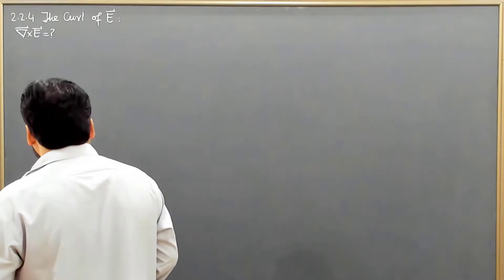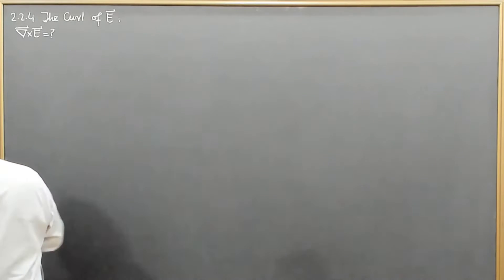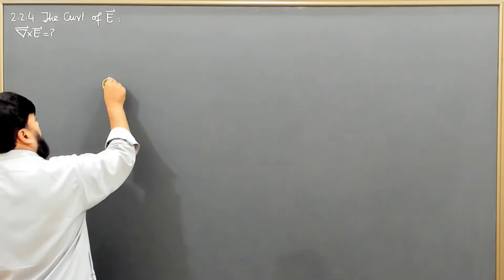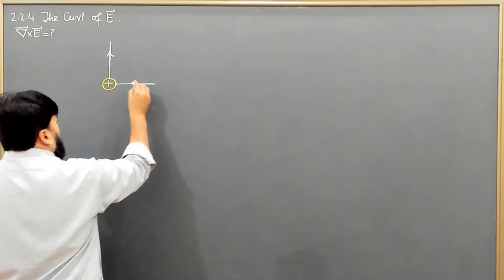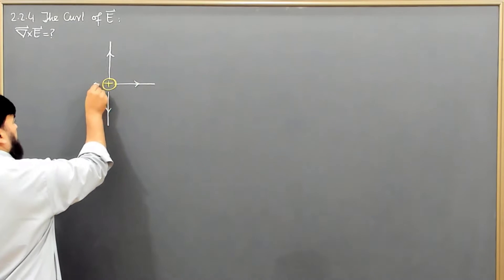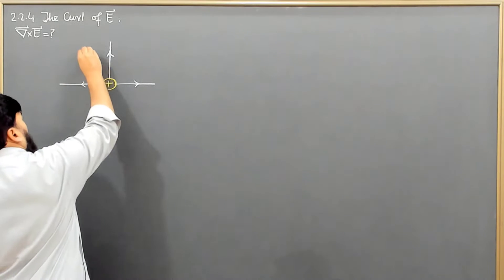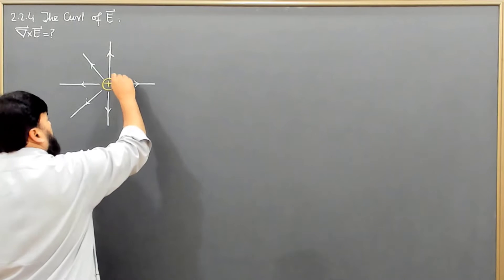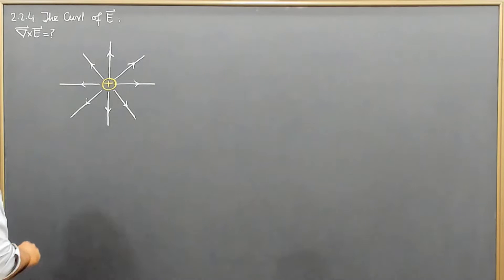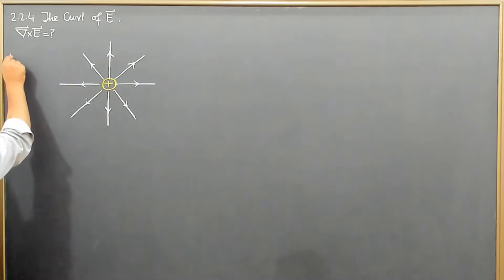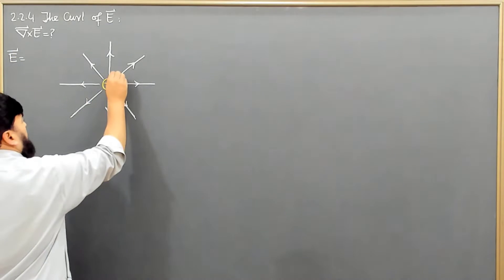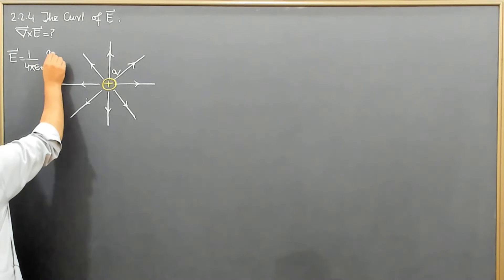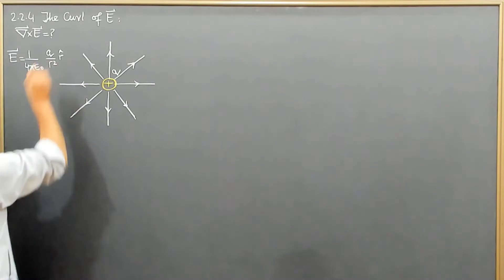Let me consider a charge here — this is a charge and the electric field lines are going away from it. This is a geometrical representation, so we will draw a few lines here. With a few lines we show that the electric field lines are diverging from the point charge. If this is a charge q, then the electric field is equal to 1 over 4πε₀ times q over r squared in the r-hat unit vector direction.